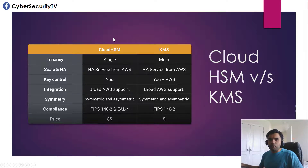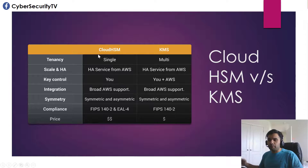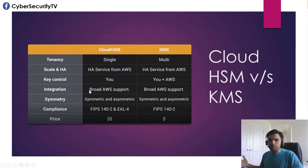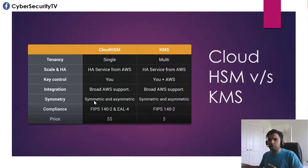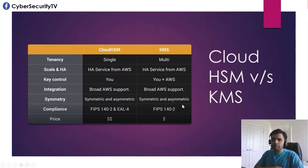Regarding key control, HSM can only be managed by the client — AWS does not have any interaction with the key store or data stored in the HSM. With KMS, both you and AWS have access to it. Both services provide broad AWS integration, so services like DynamoDB can easily pull a key from either HSM or KMS. Both support symmetric encryption — one private key to encrypt and decrypt — and asymmetric encryption with a public-private key pair. For compliance, HSM is FIPS 140-2 compliant as well as EAL4, while KMS is only compliant with FIPS 140-2.